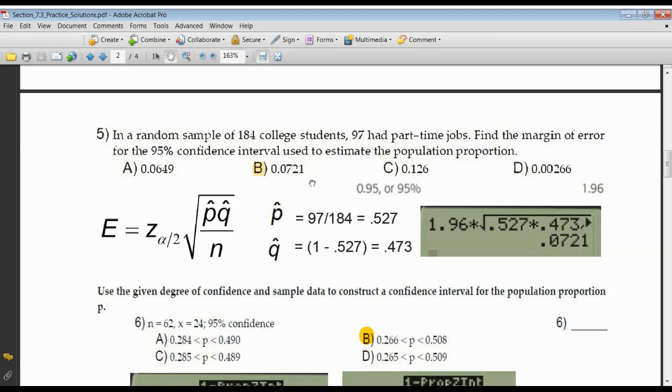We're looking for a 95% confidence interval. The Z score that's associated with 95%, 1.96, times the square root of P hat 0.527, times Q hat 0.473, divided by N, and N in this case is equal to 184. You can't see it's divided by N, 184. That's the N value. And once again, you can see things match up exactly, letter B.